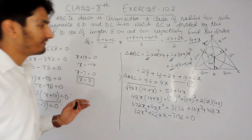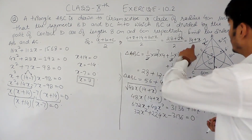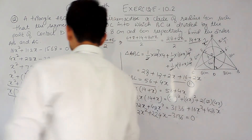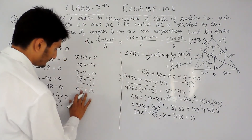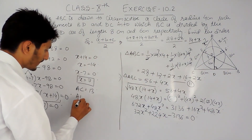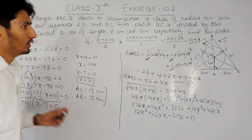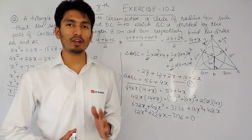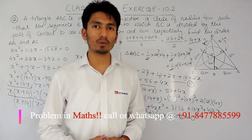With x = 7: side AC = 6 + 7 = 13 cm and side AB = 8 + 7 = 15 cm. If you liked this video please subscribe to our channel, and if you have any problem in maths you can contact us directly by phone or WhatsApp. Thank you.